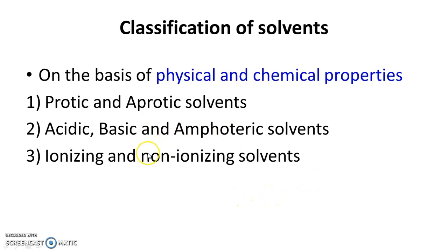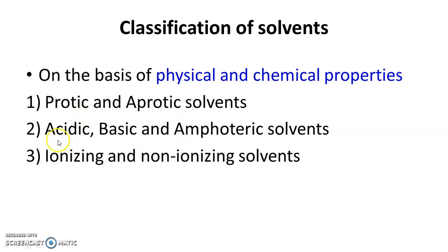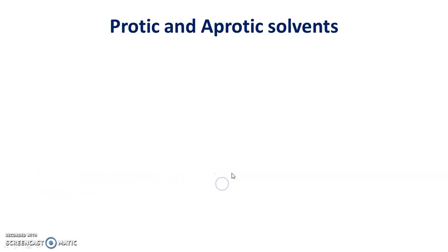The next point is the classification of solvents. On the basis of physical and chemical properties, solvents are classified as: protic or protonic and aprotic solvents; acidic, basic, or amphoteric solvents; and ionizing and non-ionizing solvents.